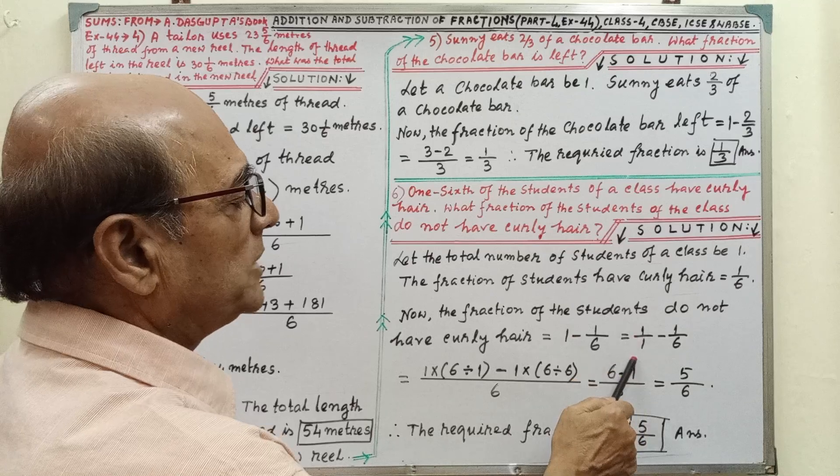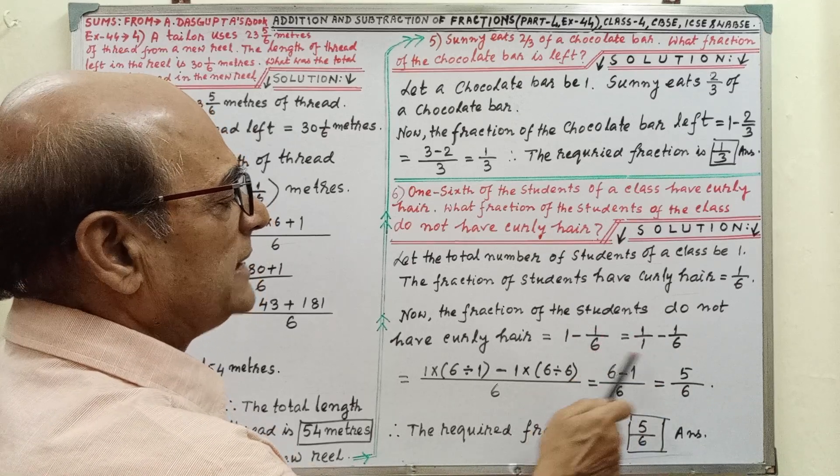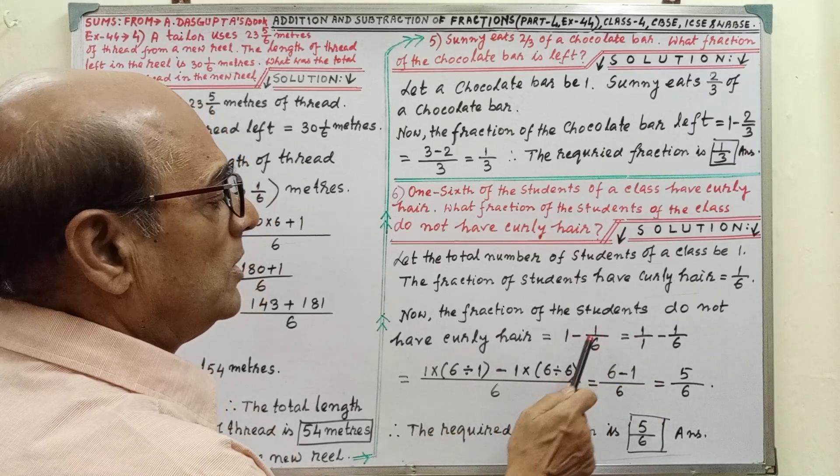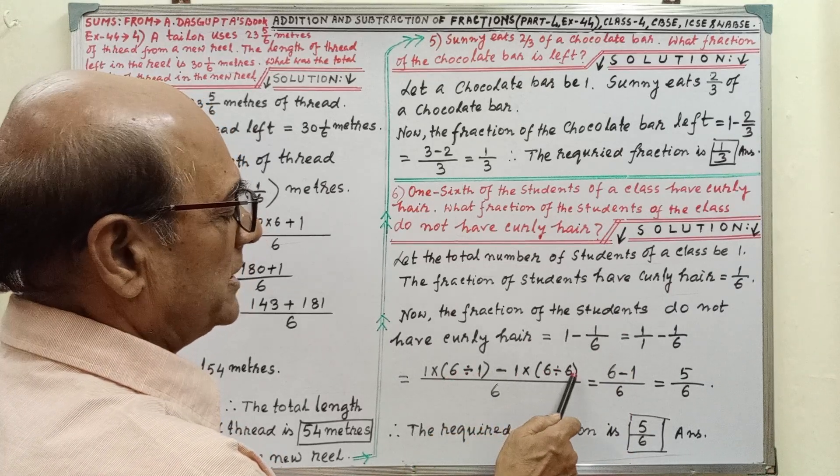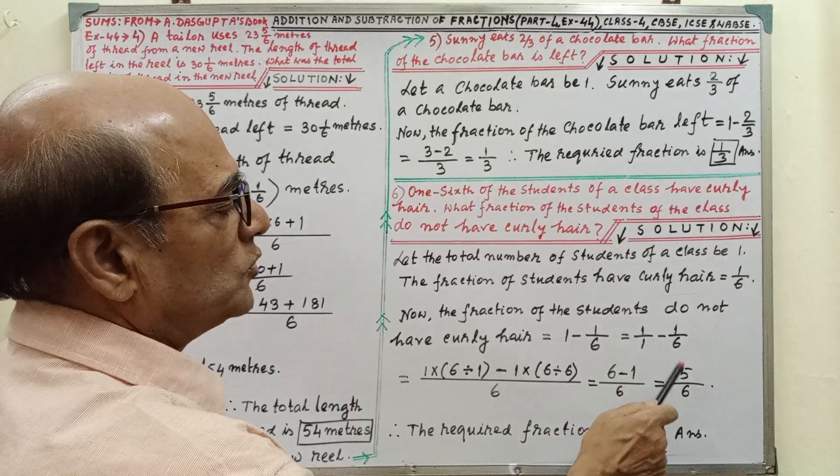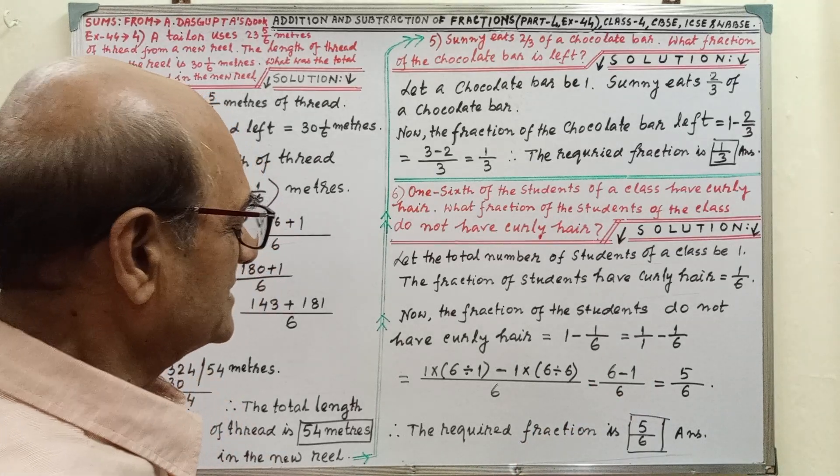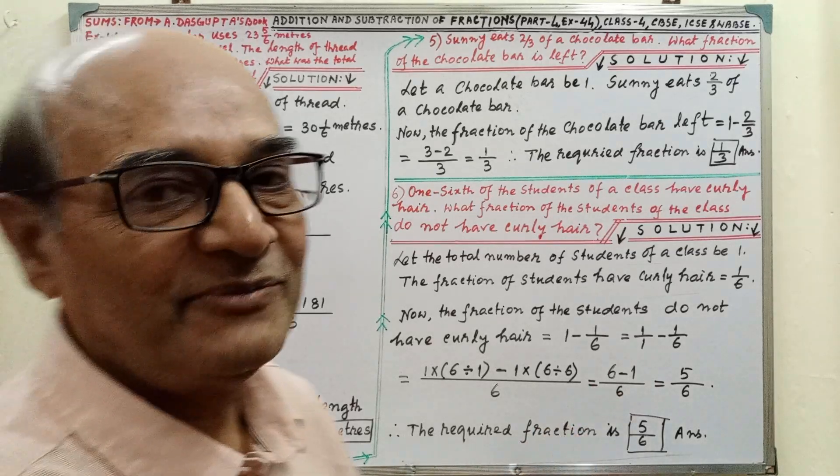By subtraction, the 1, we may write 1 by 1, minus 1 by 6. LCM that is 6. Then, 1 into 6 divided by 1, and 1 into 6 divided by 6. By simplifying, we are getting 5 by 6. The required fraction is 5 by 6.